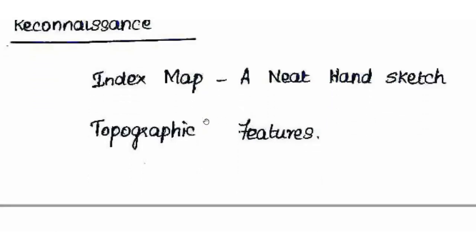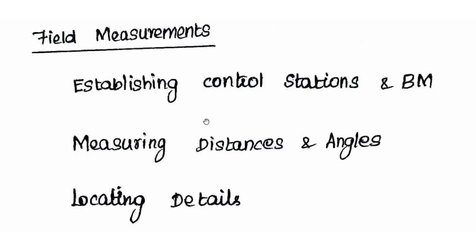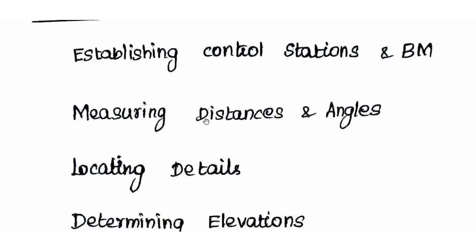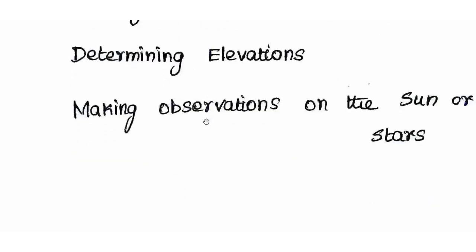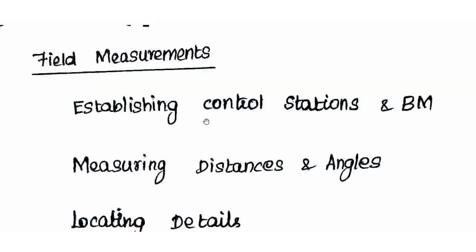Next is field measurements. In the field, a surveyor measures distance, angle, horizontal distance using instruments like chain, tape, tachometer, and EDM. We measure horizontal and vertical distance, elevation and level, benchmark — which is a point of reference — topographical features, and important details like buildings. We also measure horizontal and vertical angles using a compass, and calculate area in the field.